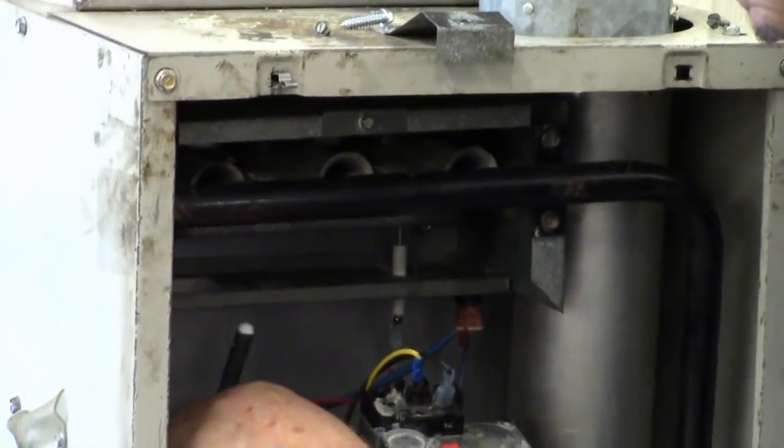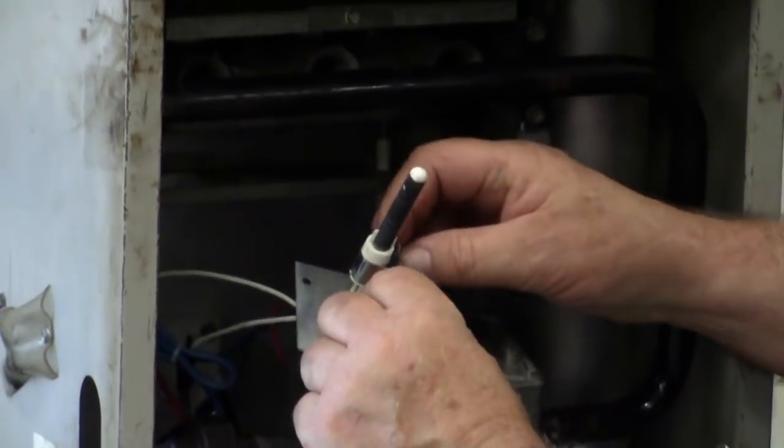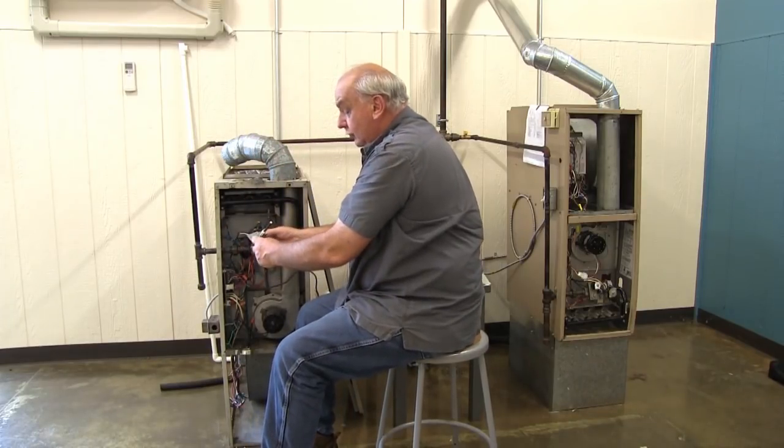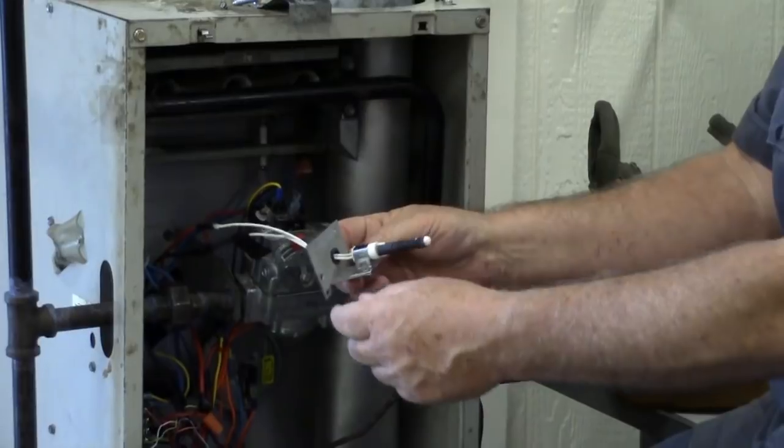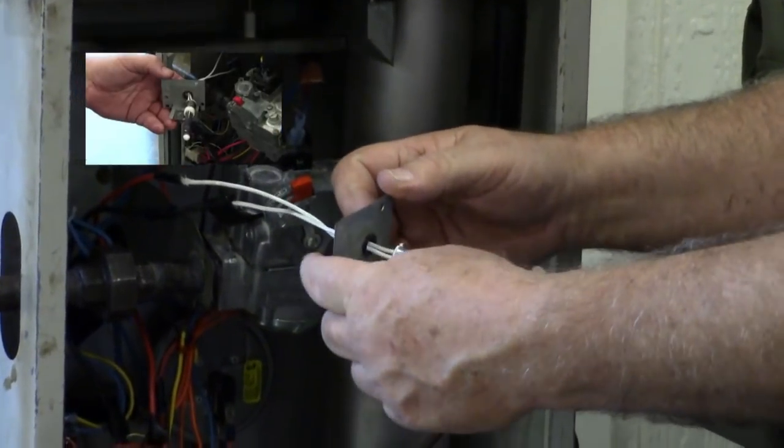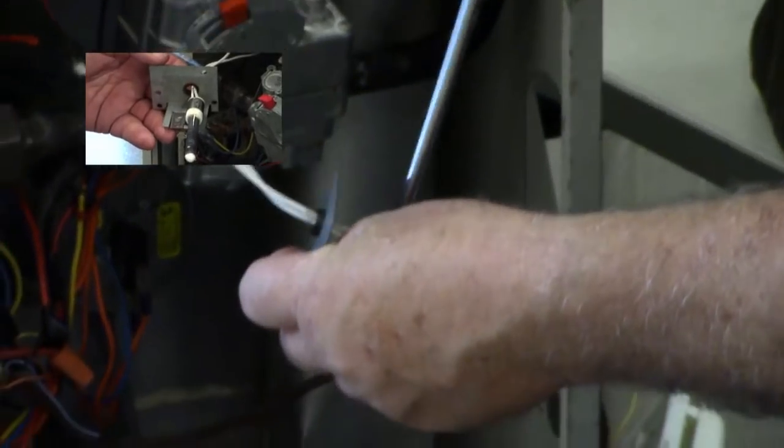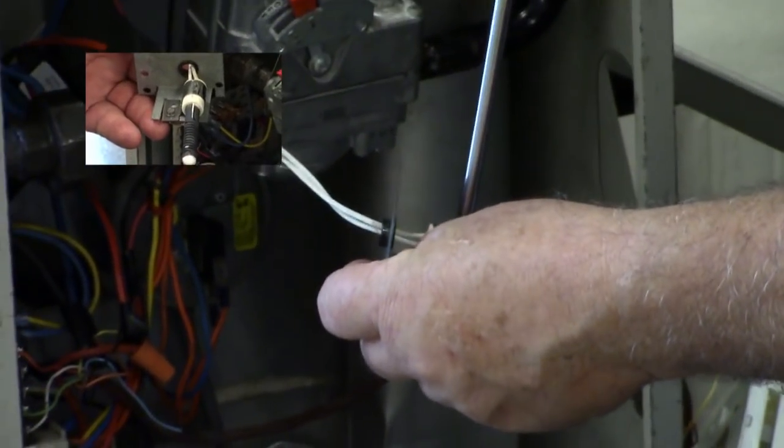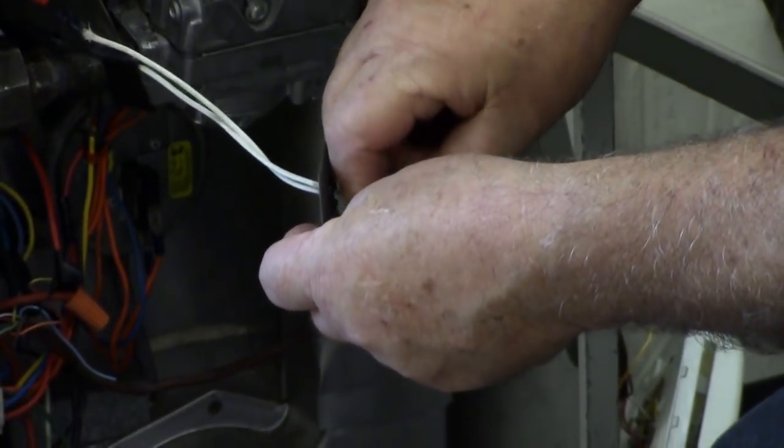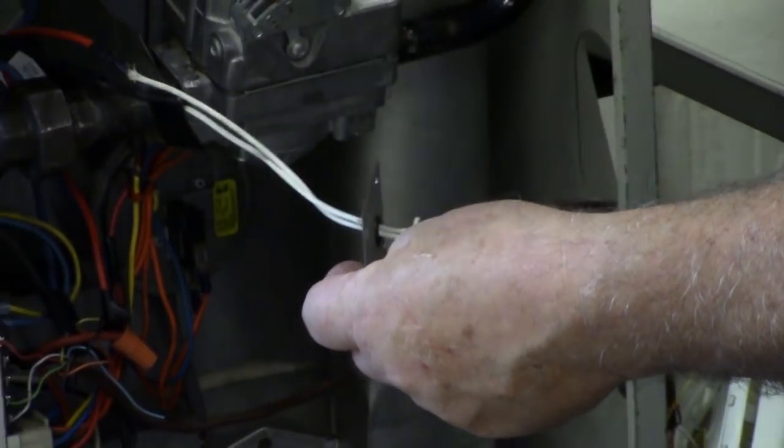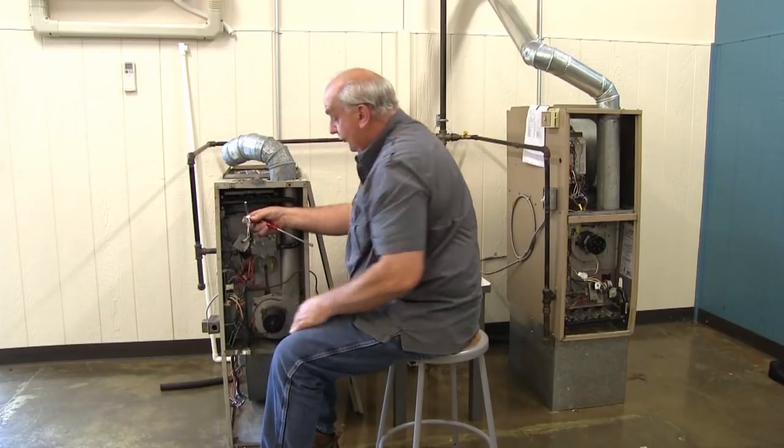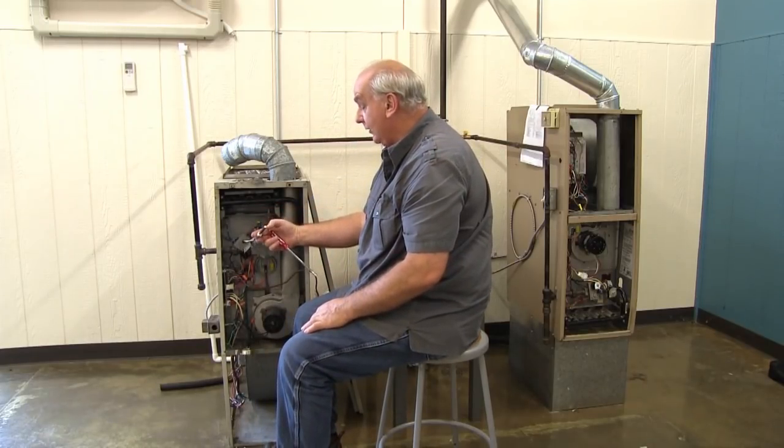The igniter comes down and out like this. There were two screws holding this in there. Now there is one more here that I can remove, and that releases the igniter from the mounting bracket.